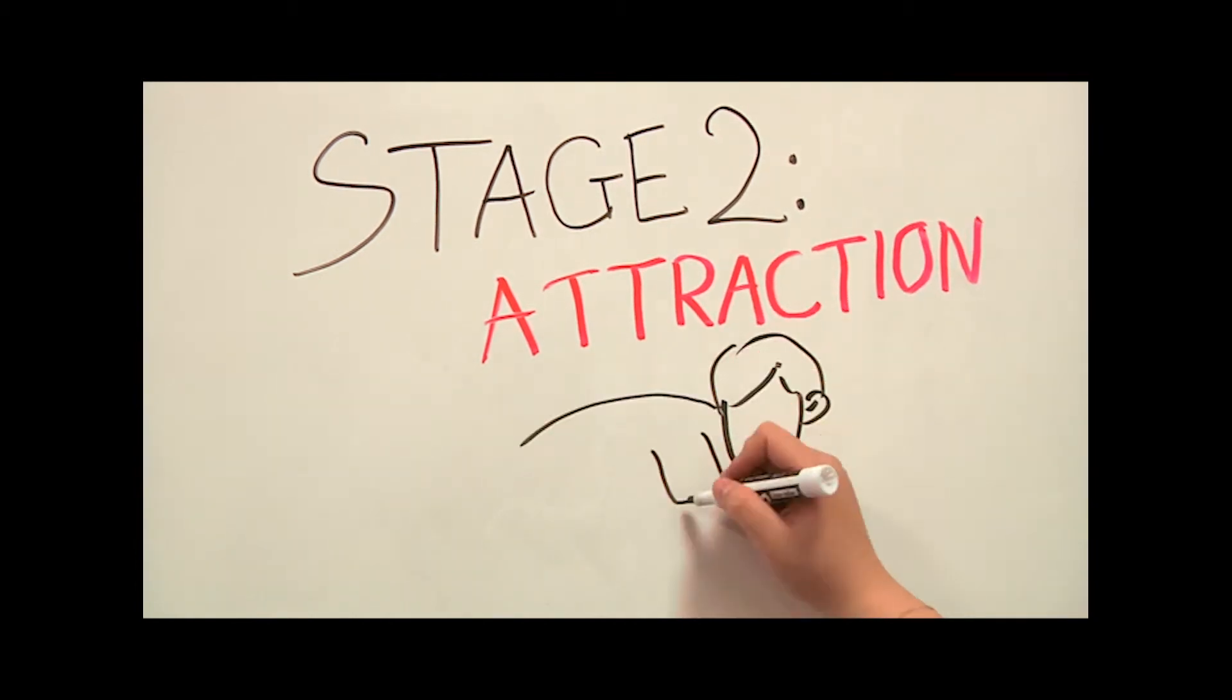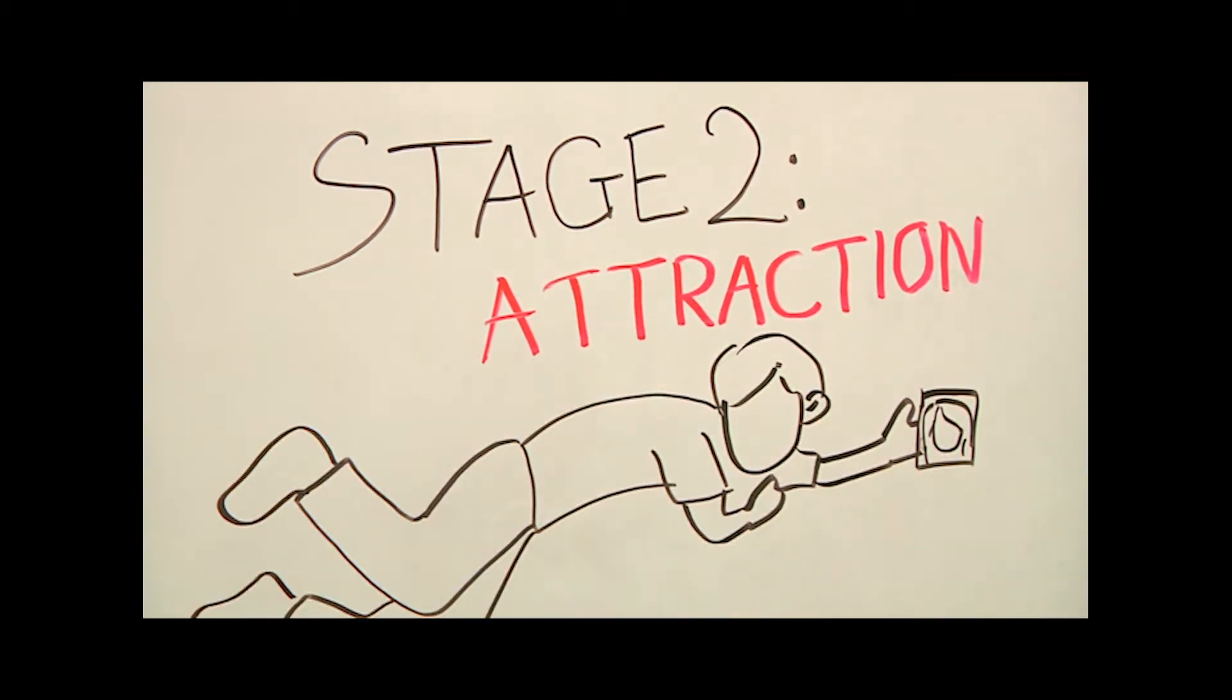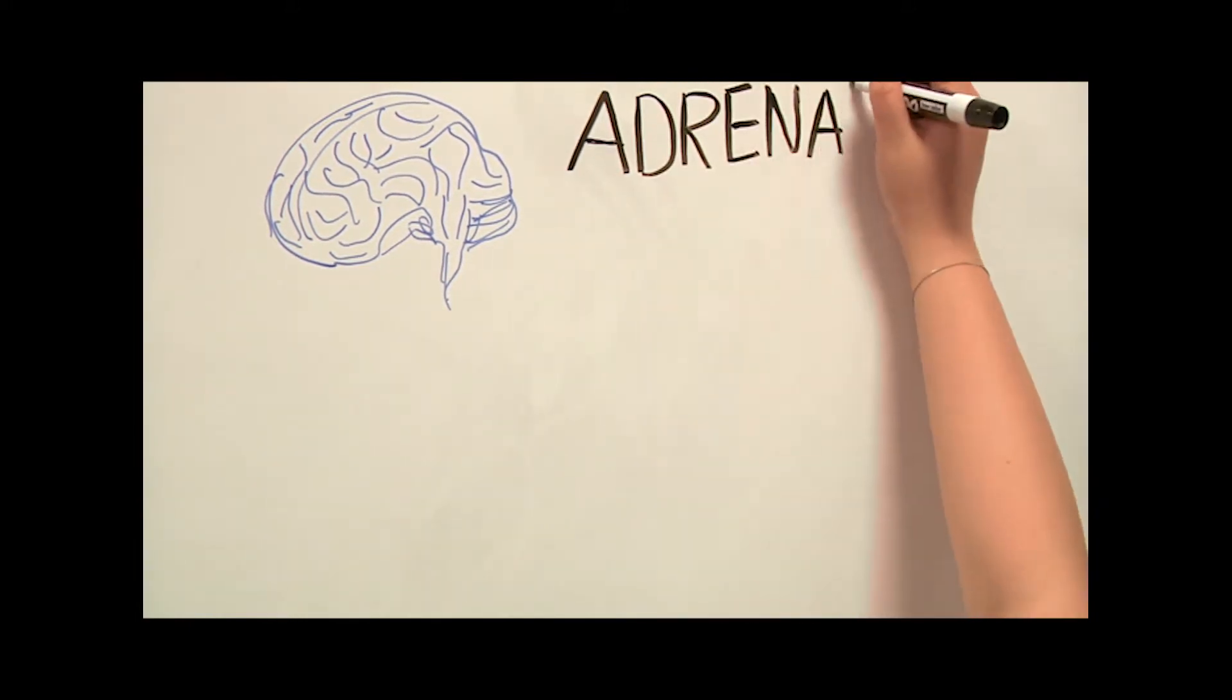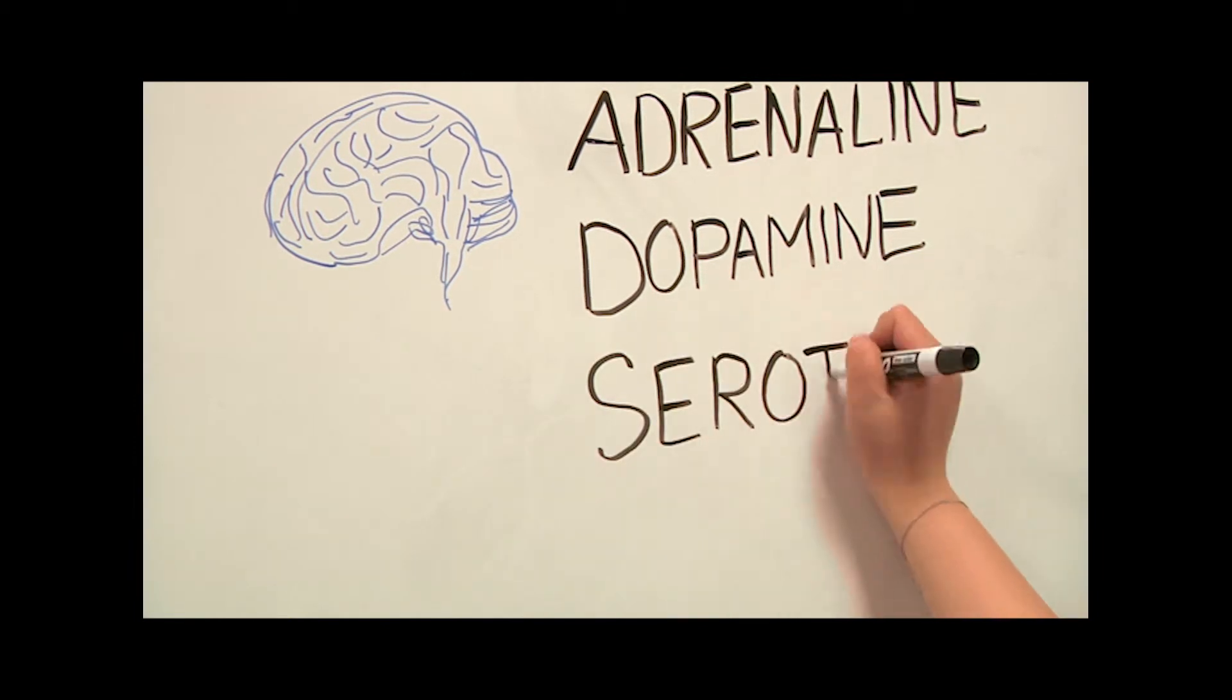Stage two: attraction. This is the amazing time when you are truly lovestruck and can think of little else. Scientists think that three main neurotransmitters are involved in this stage: adrenaline, dopamine, and serotonin.